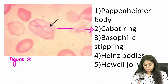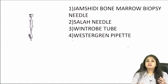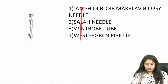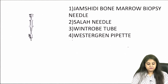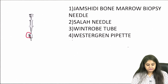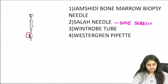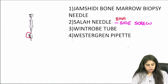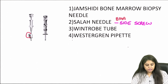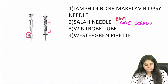Moving on to another theme — four needles to match one by one. The first needle has a side screw, and on seeing a side screw I know that is Salah's needle, used for bone marrow aspirate. If it had a longitudinal screw instead, it would be referred to as the Klima needle, again for bone marrow aspirate.